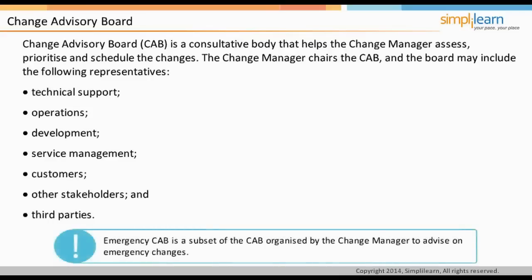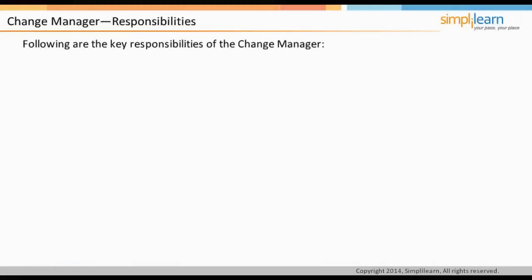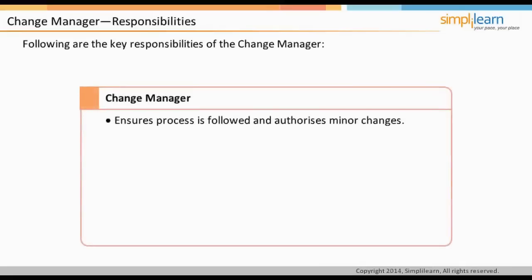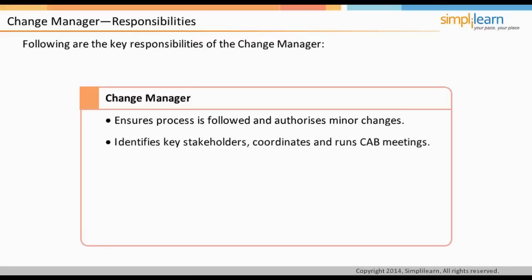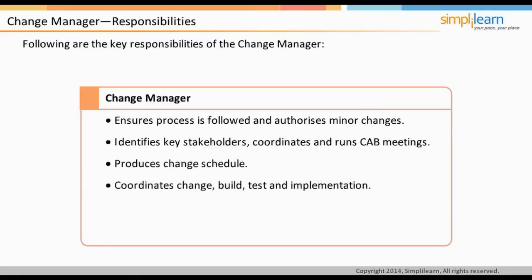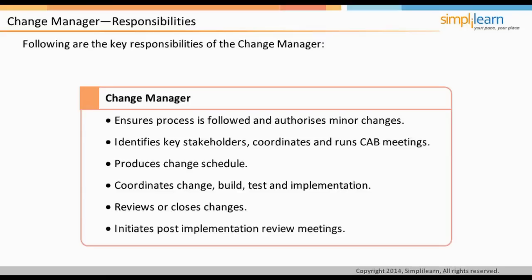Emergency CAB is a subset of the CAB organized by the Change Manager to advise on emergency changes. The key responsibilities of the Change Manager are: ensuring the process is followed and authorizing minor changes; identifying key stakeholders and running Change Advisory Board meetings; producing the Change Schedule to ensure all changes are scheduled without conflict; coordinating change build, test, and implementation; reviewing and closing changes by collating all documentation; and initiating post-implementation review meetings with the CAB.